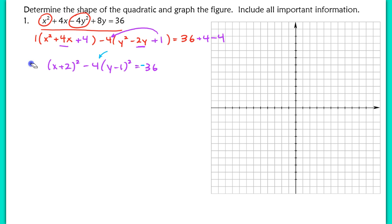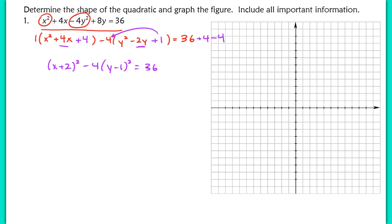Because we have a constant term in front of one perfect square and not both, it can't be a circle. We can also eliminate the ellipse because of that negative sign. So this is going to be a hyperbola. Students often have a hard time deciding what conic they have, so always be analytical. We recognize this must be a hyperbola because we have a negative sign in front of one of the perfect squares and not in front of both.